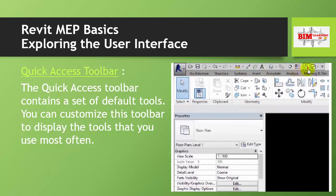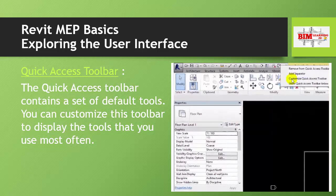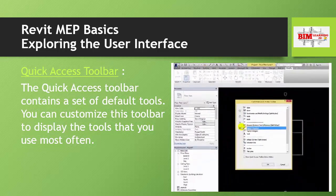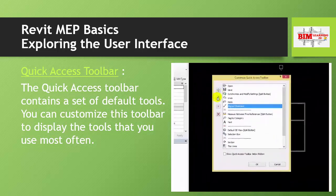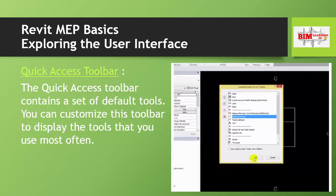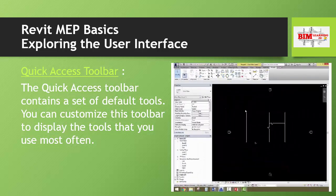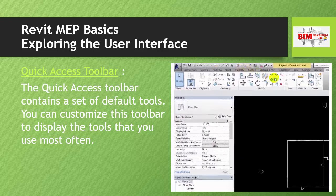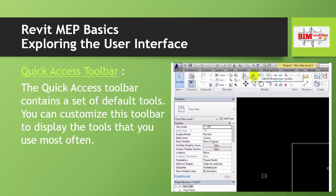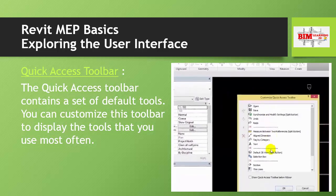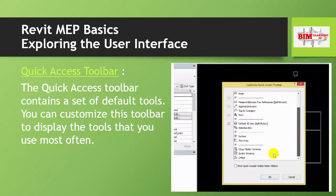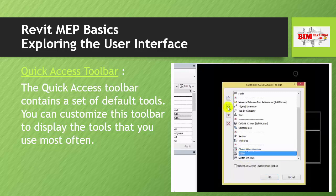The quick access toolbar contains a set of default tools. You can customize this toolbar to display the tools that you use most often. This is the customization box — you can add any tool into the quick access toolbar by clicking Add.